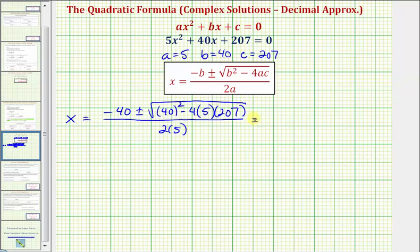Now let's begin simplifying. We have -40 plus or minus the square root of this expression here, which is called the discriminant. I'll divide it by 10.